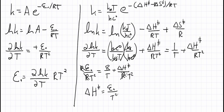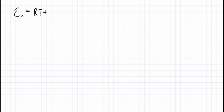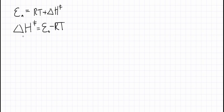So Ea over T squared equals R over T plus delta H double dagger over T squared. Multiplying both sides by T squared, we get Ea equals RT plus delta H double dagger. Or finally, delta H double dagger equals Ea minus RT. And this is for the simple case of a bimolecular solution phase reaction.